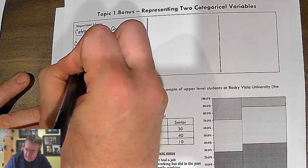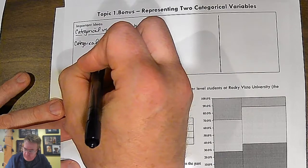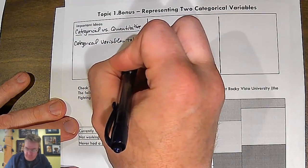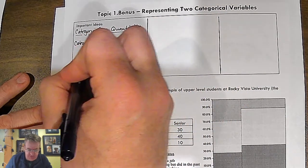Remember categorical variables take on values that have names or labels.